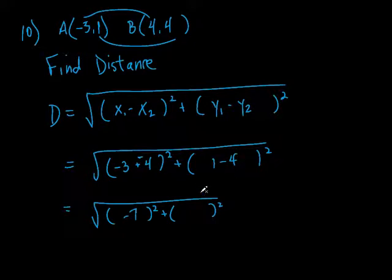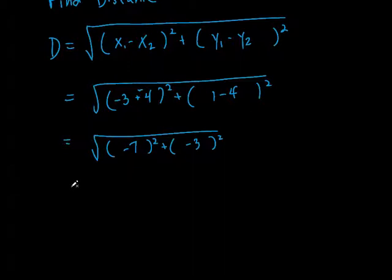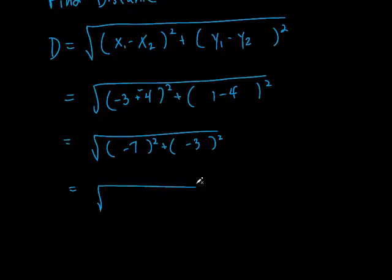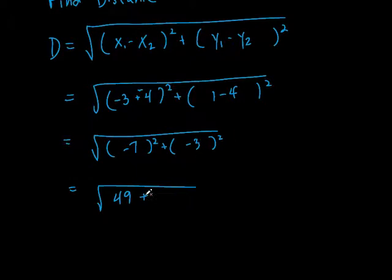What's 1 minus 4? It's negative 3. Negative 7 squared is positive 49 — when you square a negative, you get a positive, because negative times negative is positive. Negative 3 squared is positive 9. So it's the square root of 49 plus 9, which is the square root of 58.